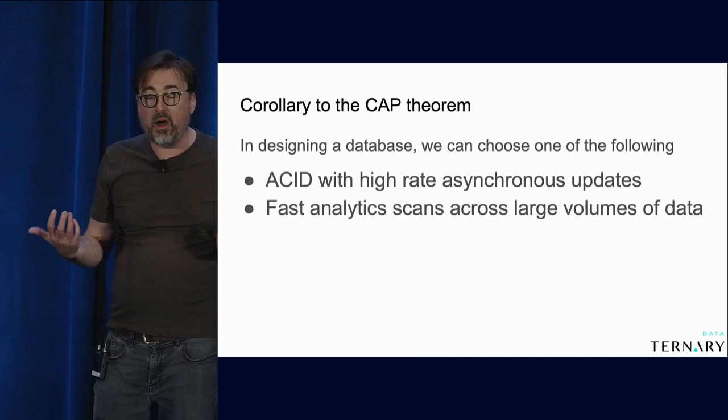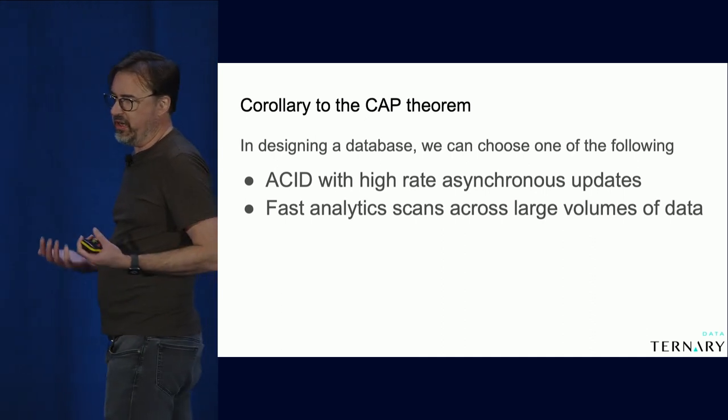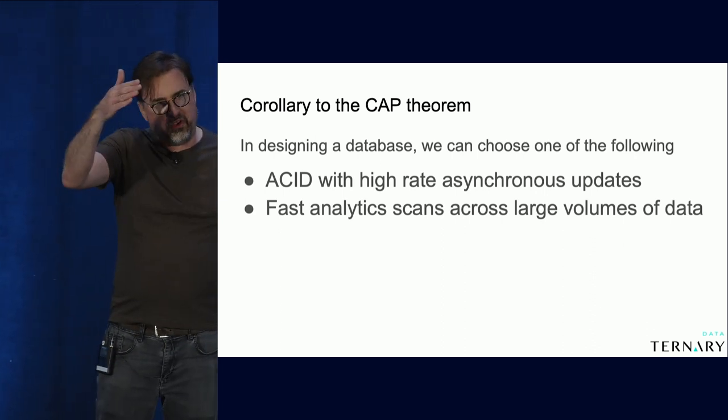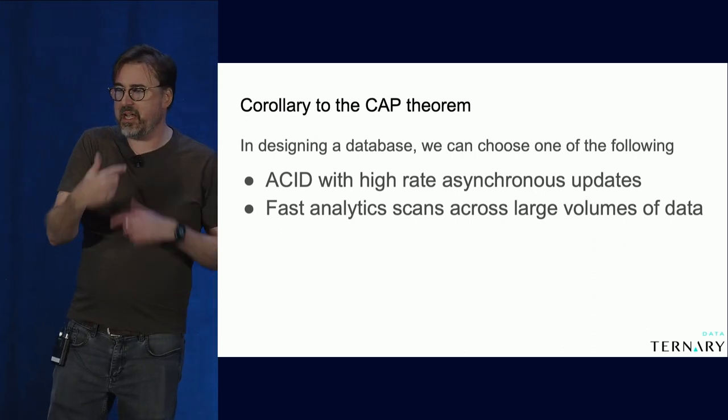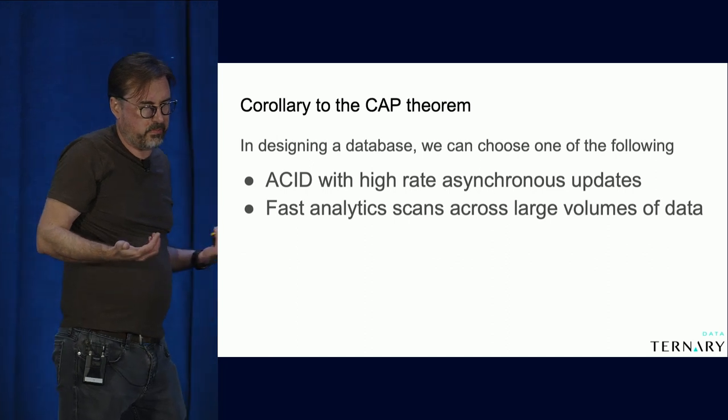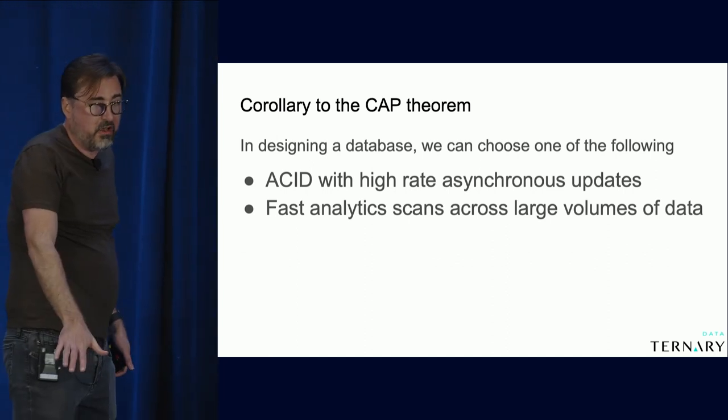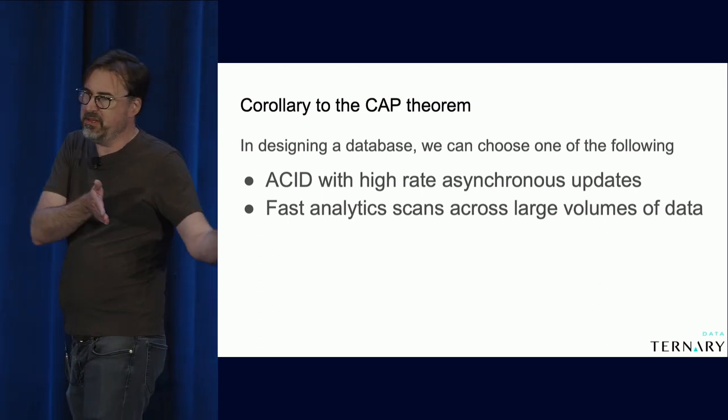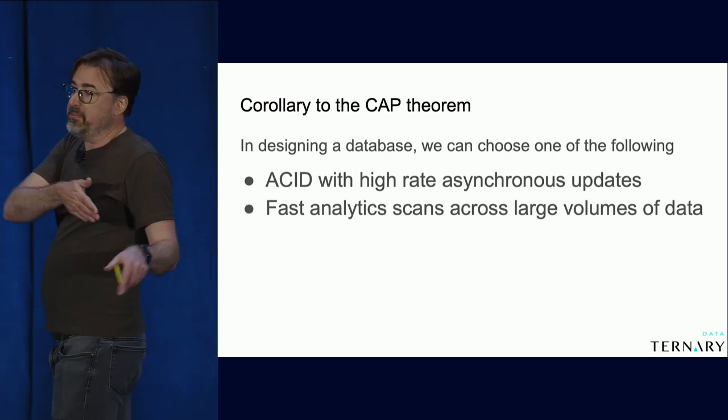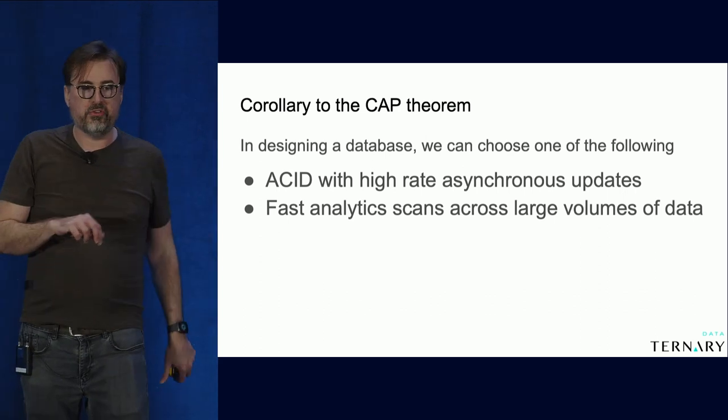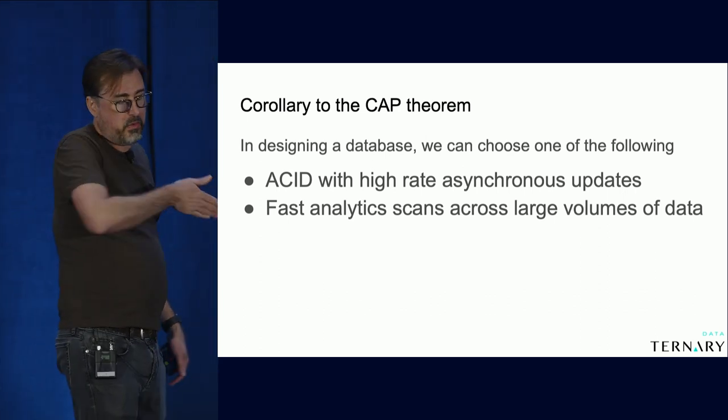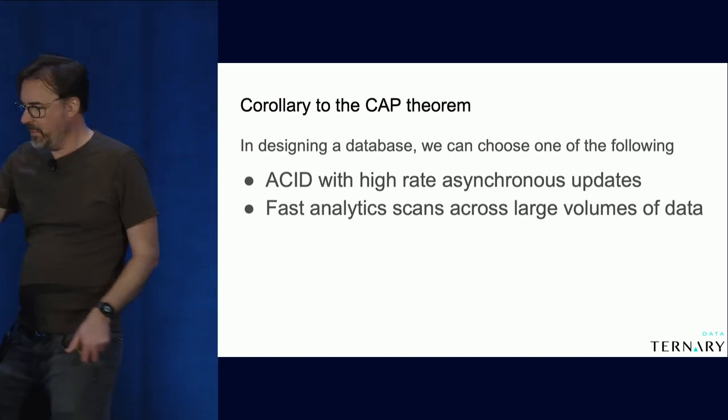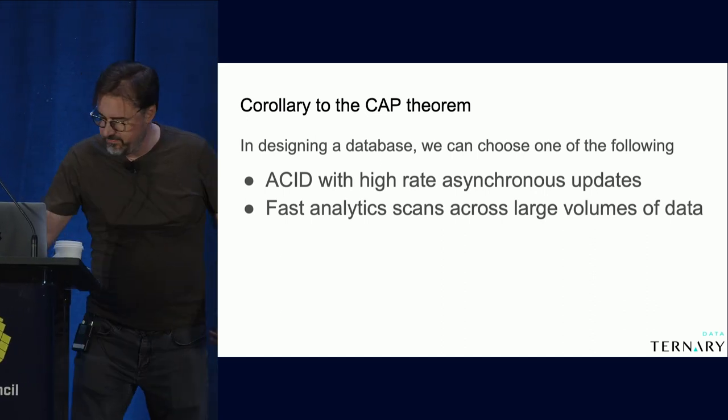You tend to use, especially in the modern columnar version of an analytics database, a snapshot model where you see the latest snapshot but you're not going to try to keep track of thousands of transactions per second anymore. Commonly, we deal with this by using a process called ETL. We keep these two databases separate and then periodically, in batch, we move data into the analytics database once in a while.